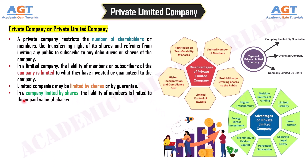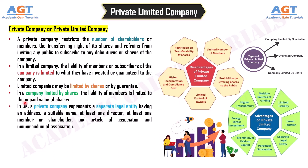In the UK, a private company represents a separate legal entity having an address, a suitable name, at least one director, at least one member or shareholder, and articles of association and memorandum of association.